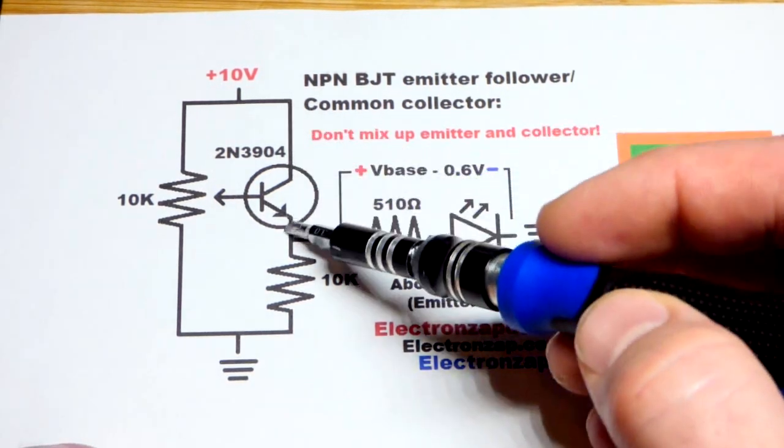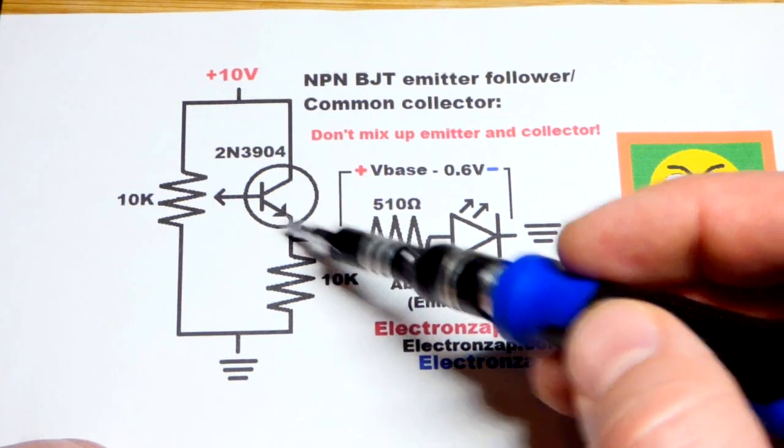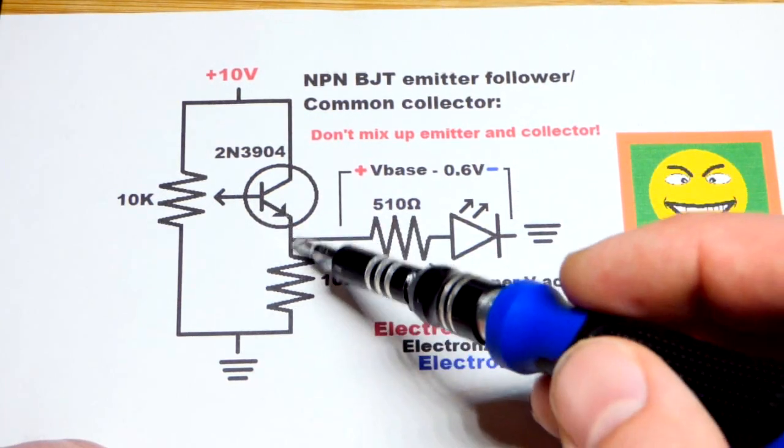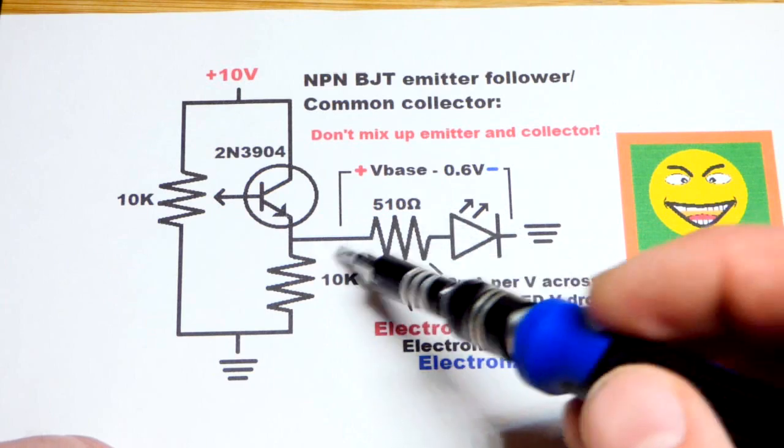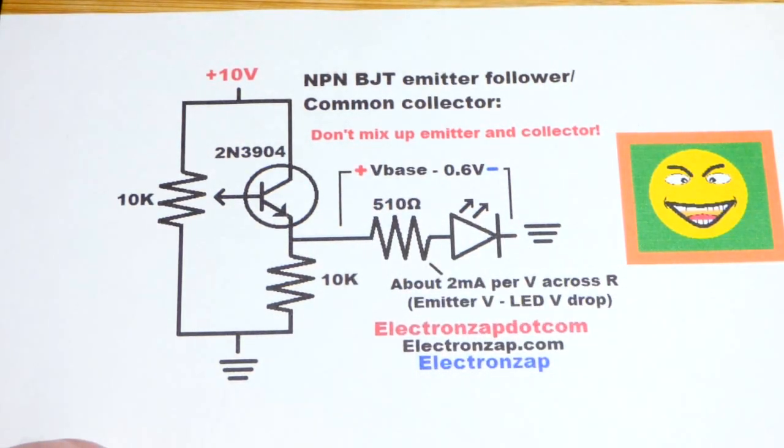And so ultimately, that current flows and builds up the voltage at that point that you set, especially if you've got that resistor there. And then you can put that across the load right there. Pretty straightforward.